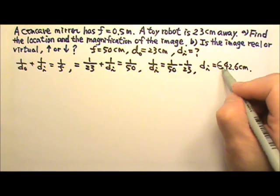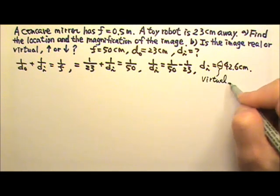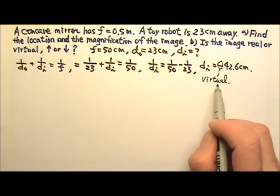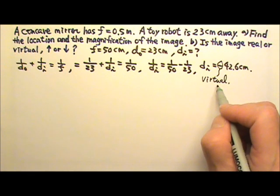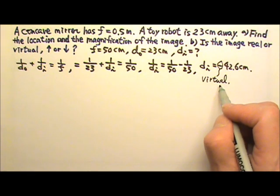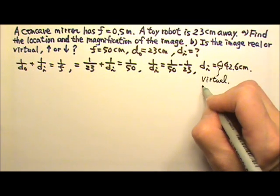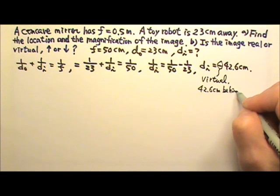The dI being negative means it is a virtual image. Since a mirror reflects light, a virtual image is formed by the ray extension. That means real light rays do not get there to form the image. Therefore, the image must be behind the mirror where no light gets to. So this image must be 42.6 centimeters behind the mirror.